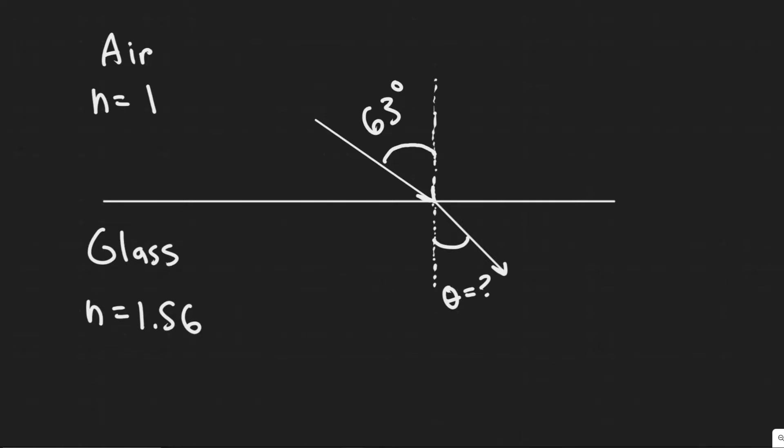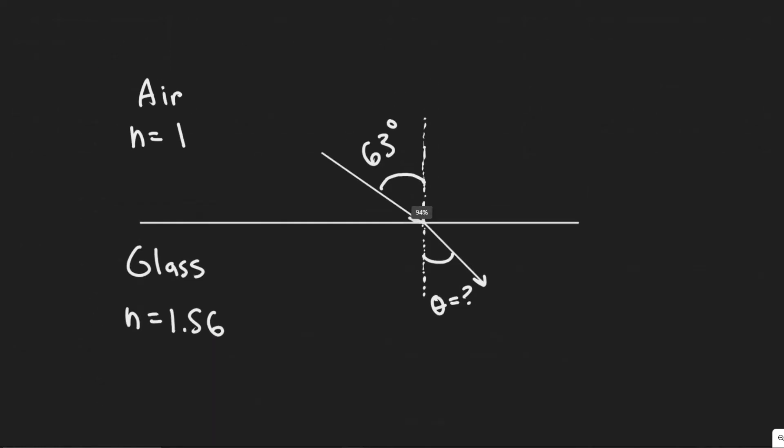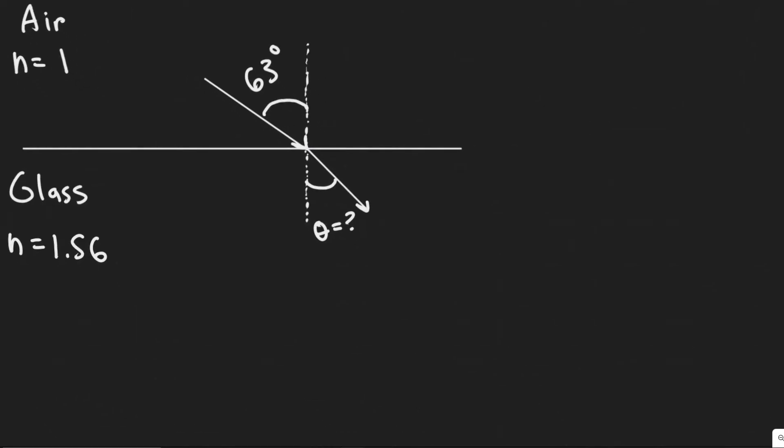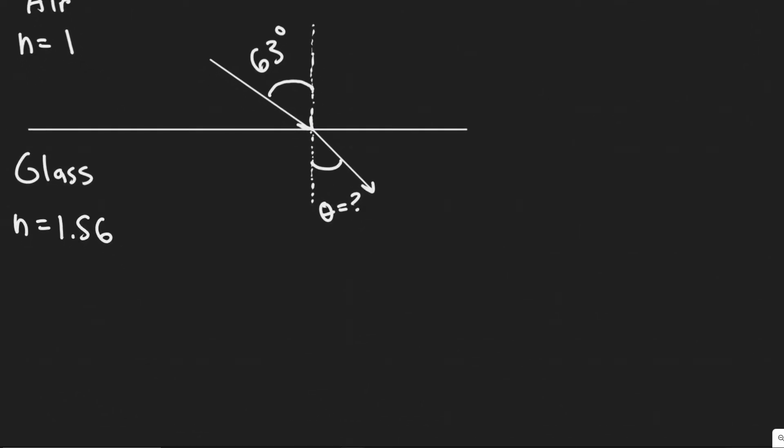And then you just need to know the value for air is equal to about 1. So your two values are n, 1.56, and then 1. As I mentioned before, we're going to be using Snell's Law to solve for this.